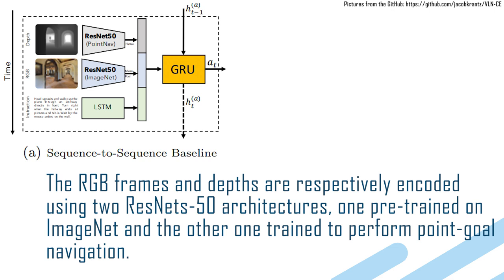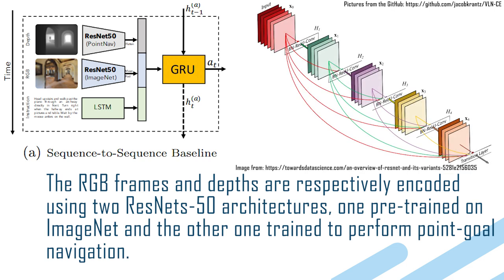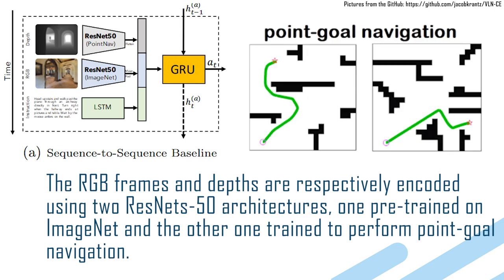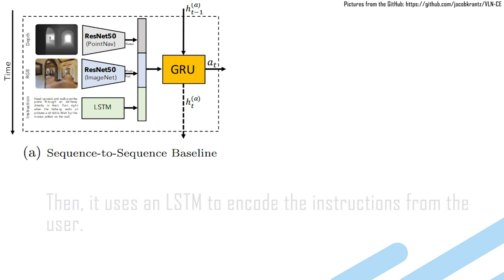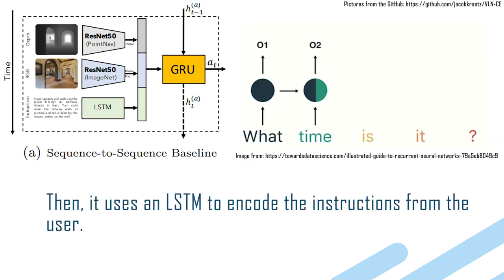The RGB frames and depth are respectively encoded using two ResNet-50 architectures, one pre-trained on ImageNet and the other one trained to perform point-goal navigation. Then, it uses an LSTM to encode the instructions from the user.